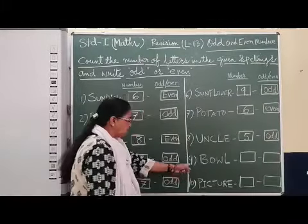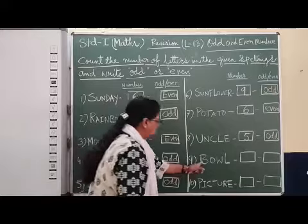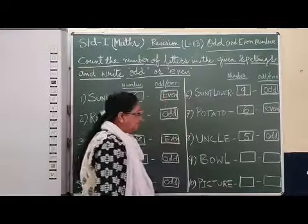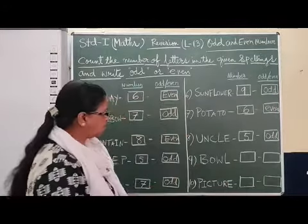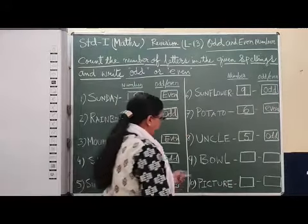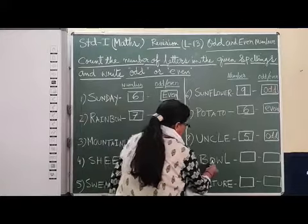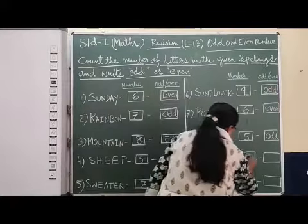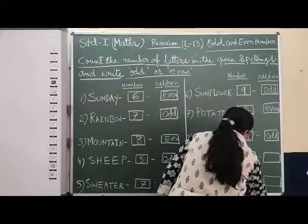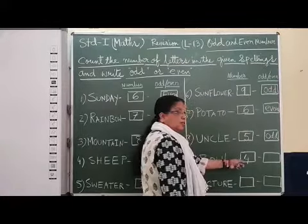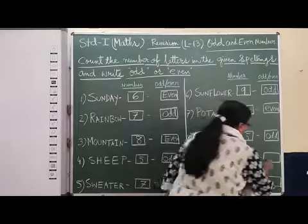Then number nine: B, O, W, N, F, O, R. How many letters? One, two, three, four — so this is also an even number.